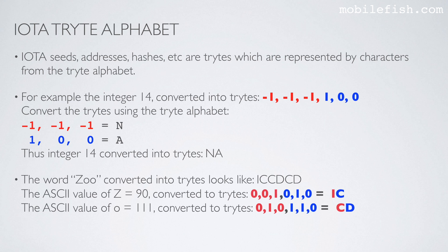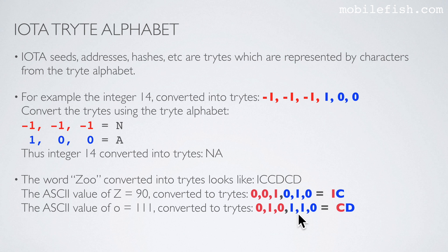Another example: the word ZOO converted into trytes looks like this. The ASCII value of Z is 90. Converted to trytes it looks like this, and if you convert these trytes using the tryte alphabet, you will get these two characters. The same for the letter O: the ASCII value of O is 111. Converted to trytes it looks like this, and if you use the tryte alphabet, you will get these two characters.